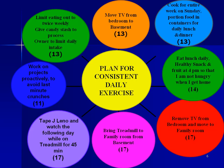The interventions with the highest scores were: remove TV from bedroom and move to family room, score 17; bring the treadmill from the basement to the family room, score 17; tape Jay Leno and watch the following day while on treadmill for 45 minutes, score 17; eat a healthy lunch and fruit snack at 4 p.m. so I'm not hungry when I get home, score 14; cook for the entire week on Sunday and portion food in containers for daily lunch and dinner, score 13; move TV from bedroom to basement, score 13; limit eating out to twice weekly and give candy stash to process owner, score 13. The lowest scoring intervention — work on projects proactively to avoid last-minute crunches — scored 11.